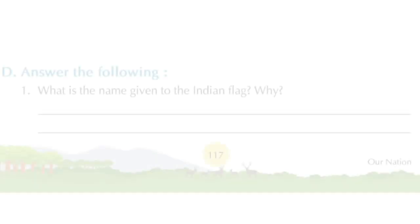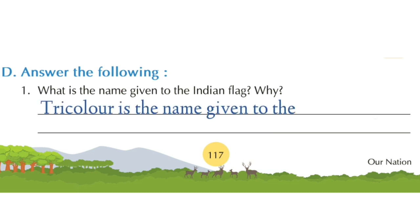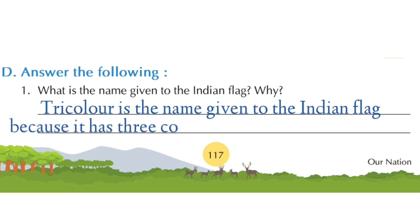Now children, let's do some exercise questions from the textbook. Kindly turn to page number 117. Question: What is the name given to the Indian flag, and why? Answer: Tricolor is the name given to the Indian flag because it has three colors — saffron, white, and green.